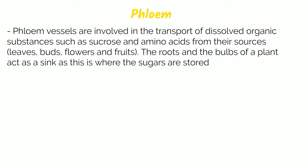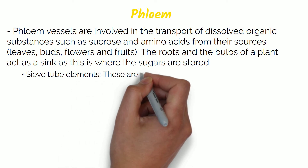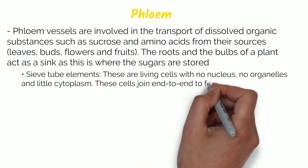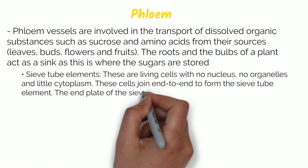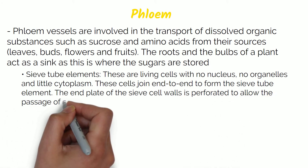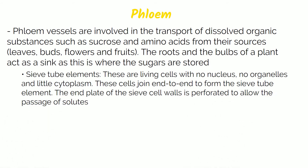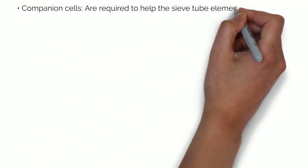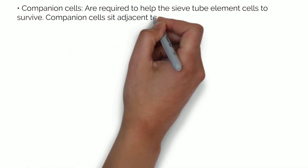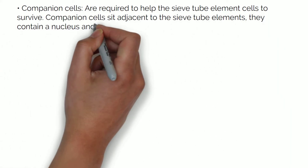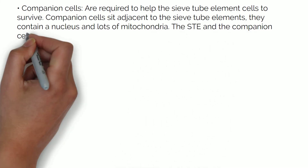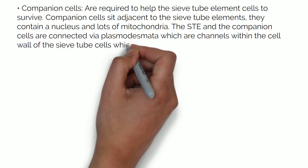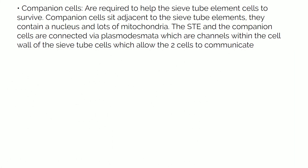Phloem vessels consist of two types of cells: sieve tube elements, which are living vessels with no nucleus, no organelles and a little cytoplasm. These cells join end-to-end to form the sieve tube element. The end plate of the sieve cell walls are perforated to allow the passage of solutes from cell to cell. Companion cells are required to help the sieve tube element cells to survive. Companion cells sit adjacent to the sieve tube elements and contain a nucleus and lots of mitochondria. The sieve tube elements and companion cells are connected via plasmodesmata, which are channels within the cell wall of the sieve tube cells which allow the two cells to communicate.